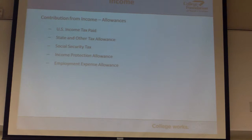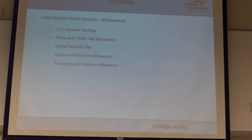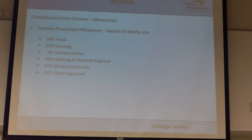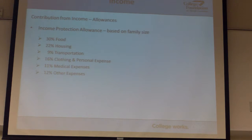They're using just slightly above the poverty line. This is why the treatment feels harder for higher earners. The income protection allowance breakdown: 30% of it is food. Most of the money goes to food — most of your monthly expenses go to food.